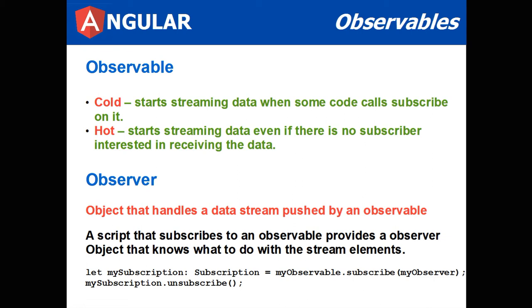An observer is an object that handles a data stream pushed by an observable. A stream that subscribes to an observable provides an observer object that knows what to do with the stream elements. For example, let mySubscription of type Subscription equal myobservable.subscribe myobserver. You could also unsubscribe.